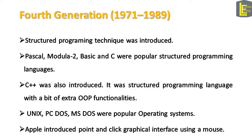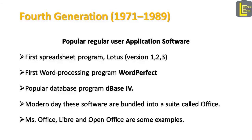Popular operating systems in this generation were Unix, PC-DOS for IBM computers, and MS-DOS for many general computers. In this generation, for the first time a mouse was introduced — Apple introduced its point-and-click graphical user interface using a mouse. Popular regular user application software were spreadsheet programs like Lotus 1-2-3, and the first word processing program like WordPerfect, and a small database program like DBase 4.